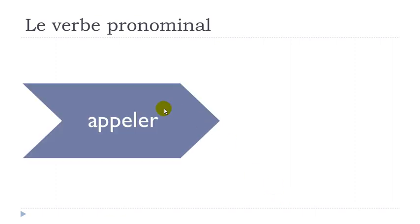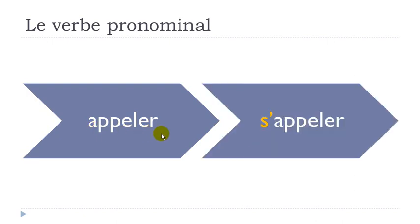Let's take another example: appeler, to call. The important thing here is that appeler starts with a vowel — the letter 'a'. So normally we'd have 'se', but the 'e' disappears and it becomes s'appeler. So appeler means to call, and s'appeler means to call oneself.